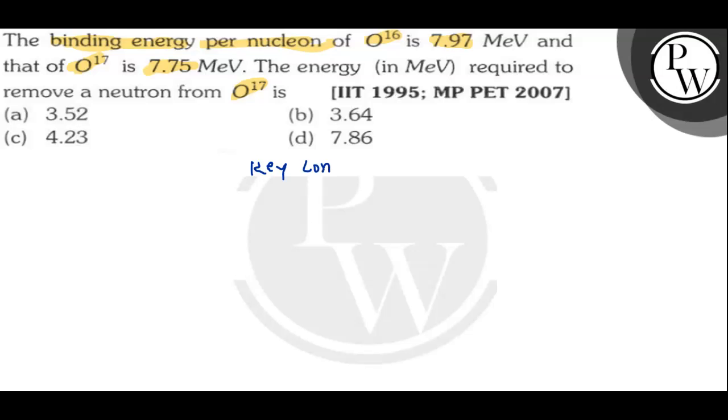If we talk about the key concept of the question, so basically the question will be based upon the reaction in which we can see how a neutron is removed from O-17. So at first, we have to just write down the reaction.